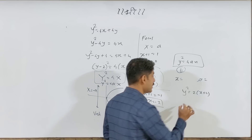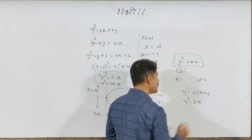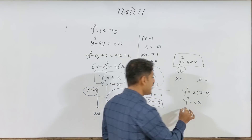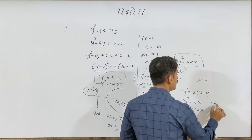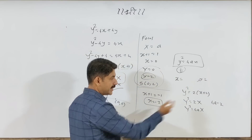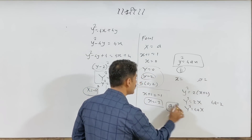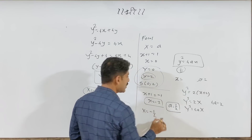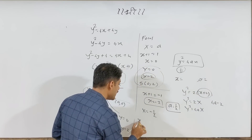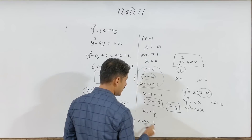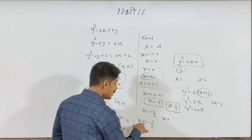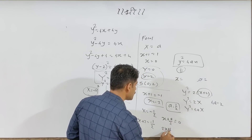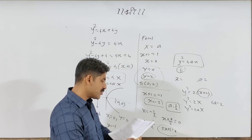Next problem: the parabola equation is y squared equals 2 times (x plus 2). Vertex is not at origin. Comparing with y squared equals 4ax: 4a equals 2, so a equals 1/2. For the directrix: capital X equals minus a equals minus 1/2. Since capital X is x plus 2, we get x plus 2 equals minus 1/2, so x plus 5/2 equals 0, giving 2x plus 5 equals 0 as the directrix equation.